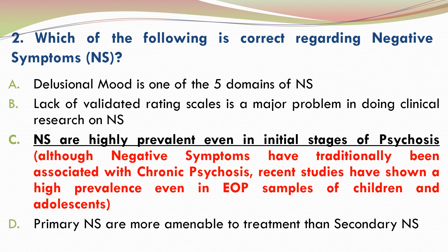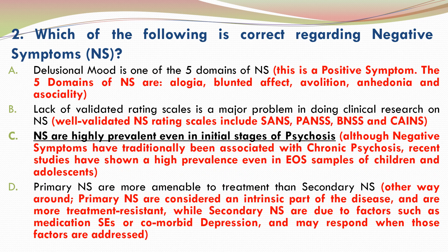The other 3 statements are incorrect. A is incorrect because delusional mood is not a negative symptom — it is a positive symptom. The 5 domains of negative symptoms are alogia, blunted affect, avolition, anhedonia, and asociality.